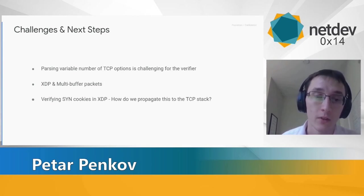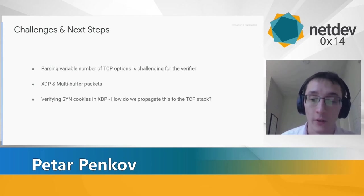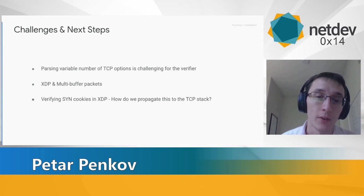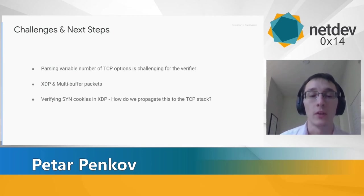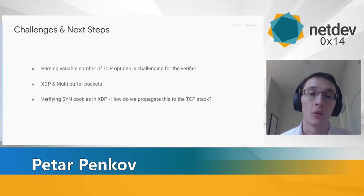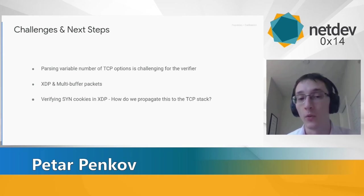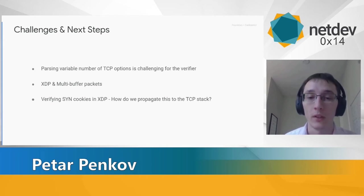There is a clear area for future work: currently we only issue SYN cookies, but there's another part to SYN flood mitigation — verifying that incoming SYN cookies are correct. There was already a BPF TCP check SYN cookie helper added before this project, which allows quickly rejecting packets with incorrect SYN cookies. The challenge is that for normal connections, we'd have two stages of verification — one in the XDP program and one in the kernel — creating overhead we'd like to avoid. We don't yet have an answer to how to propagate this information to the TCP stack to avoid overhead on genuine connections.